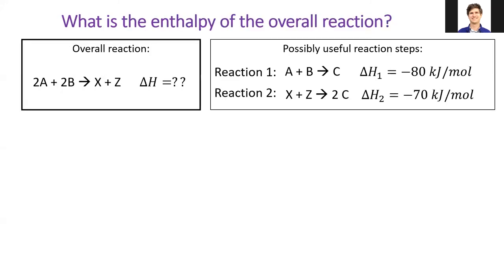Let's look at a more complicated sequence. Suppose we already know the overall reaction is 2A plus 2B forms X and Z, but we don't know the overall enthalpy of this reaction. Instead, we know the enthalpies of two reactions which involve a lot of the same chemicals. Can we use Hess's Law to calculate the overall reaction enthalpy? This is sort of like a logic puzzle, and I like logic puzzles.